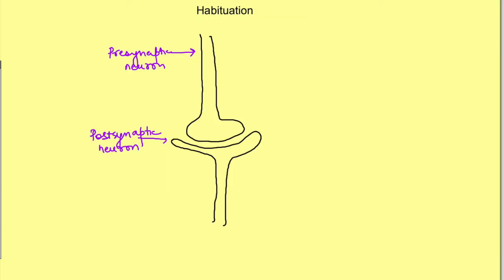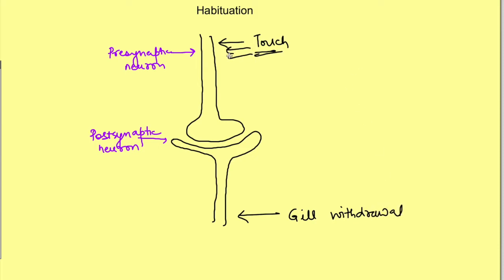The physiological basis of this learning has been studied in the species Aplysia. When its siphon is touched once, there is a gill withdrawal. However, when the siphon is touched repeatedly with a harmless stimulus, the gill withdrawal response slowly decreases and finally there is no withdrawal of the gill at all.